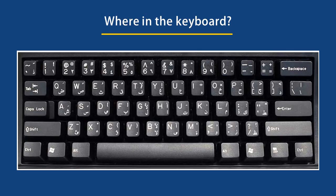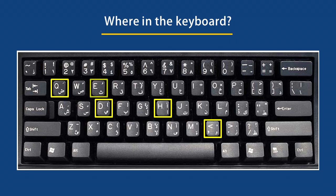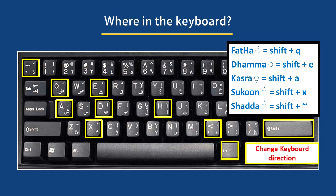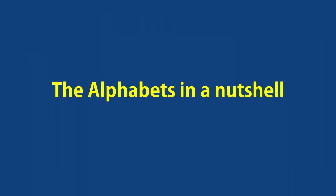To type harakat on an Arabic keyboard, you must press and hold the Shift key. Long vowel positions: Alif is on the H key, Waw on the greater-than key, and Ya on D. For harakat: fatha is Shift+Q, dhamma is Shift+E, kasra is Shift+A, sukoon is Shift+X, and shadda is Shift+backtick. Of course, this is done after you change the language direction to Arabic.